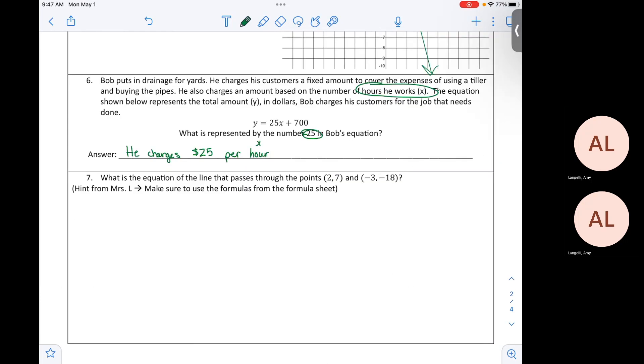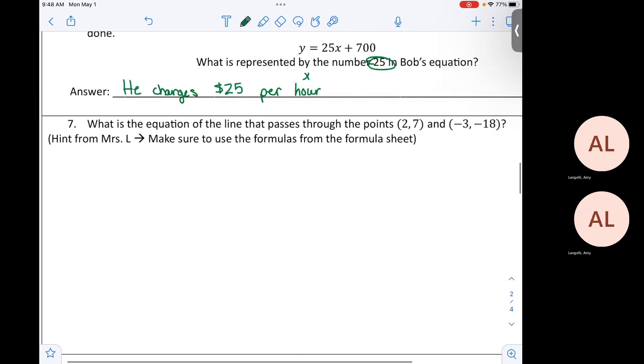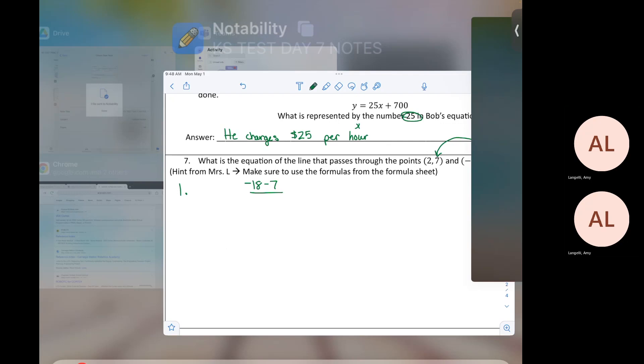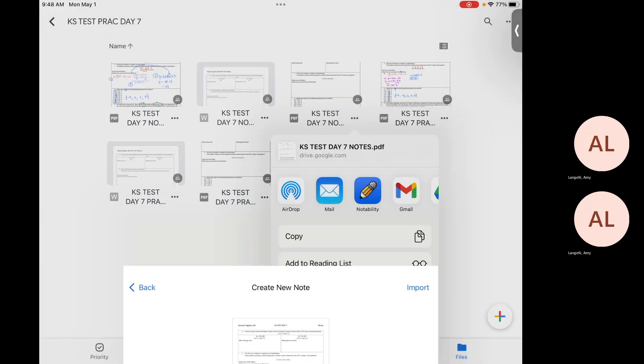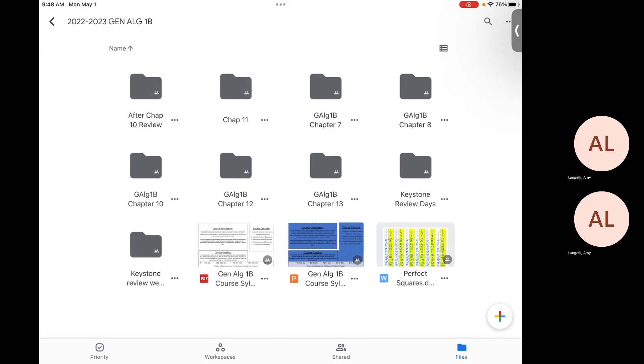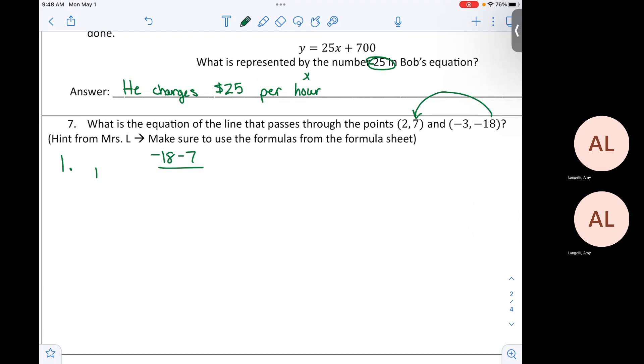What is the equation of the line that passes through 2, 7, and negative 3, negative 18? Make sure you use your formulas from your formula sheet on the keystones. What formulas would you use on this one? That's right. That is step one. Is this the formula? So, I'm going to write M equals. Now, that's the numerator. What's the denominator? Negative 3 minus 2.